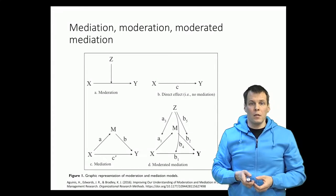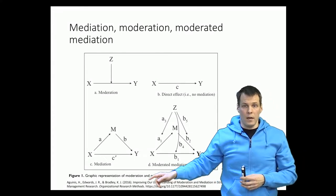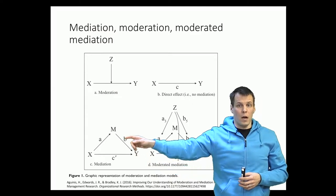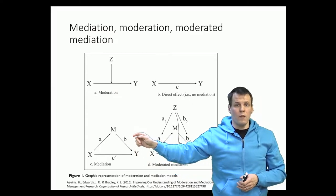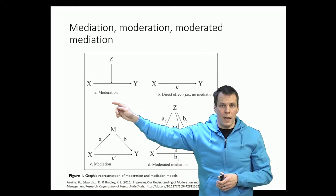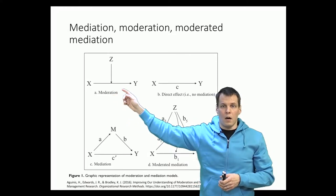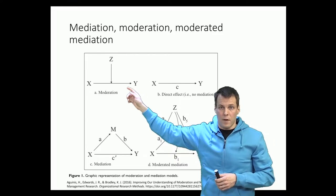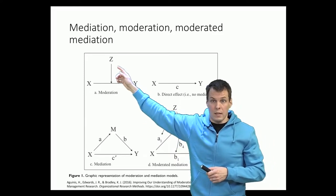The idea of mediation is that when you have X and Y, the effect of X on Y goes through a third variable called the mediator. The idea of moderation is that when you have a relationship between X and Y, the strength of that relationship varies as a function of a third variable, which here is Z.